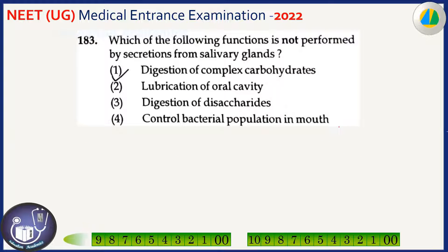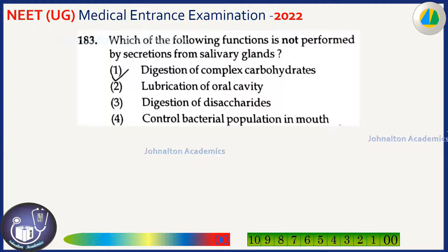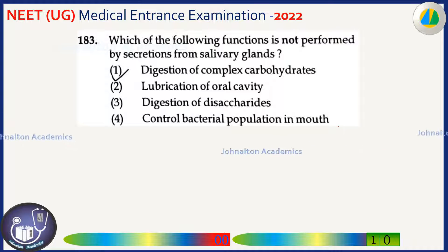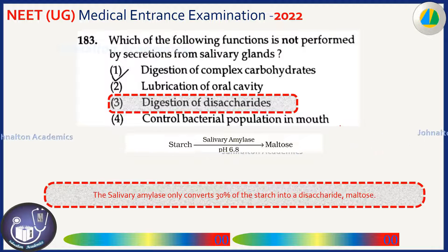Which of the following functions is NOT performed by secretions from the salivary gland? Digestion of complex carbohydrates and lubrication of the oral cavity are correct functions. Digestion of disaccharides is wrong — salivary amylase can digest 30% of starch up to maltose, but it cannot digest maltose itself, so it cannot digest disaccharides. Controlling bacterial population is correct. So the correct answer here is the third one. You can read the explanation and see the image here.